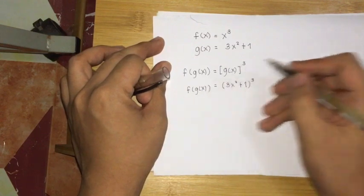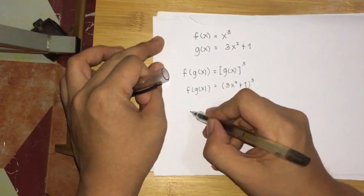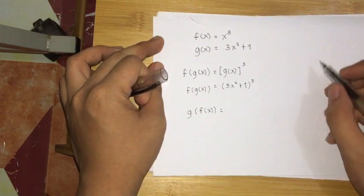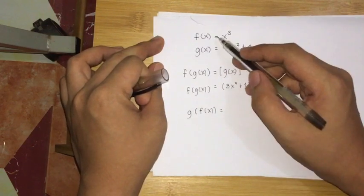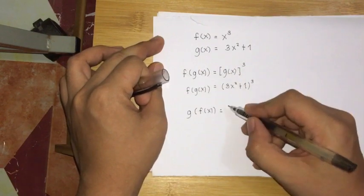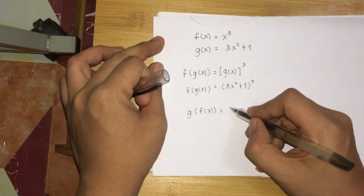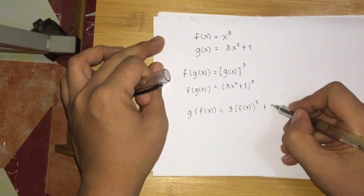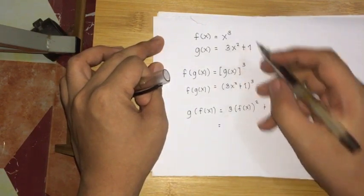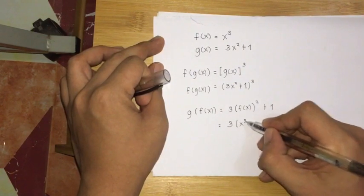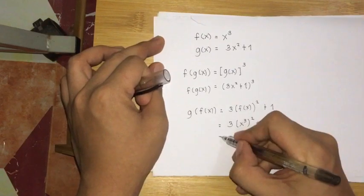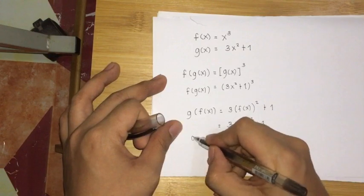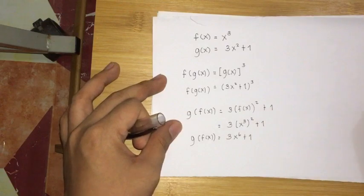Likewise, if we want to find the composite function g(f(x)), we evaluate g(x) at f(x), substituting f(x) into all the x's in g(x). So g(f(x)) = 3·(f(x))² + 1. Substituting the original value of f(x), we have 3·(x³)² + 1, and simplifying, 3·x³ squared is x⁶, giving us 3x⁶ + 1. This is our composite function g(f(x)).